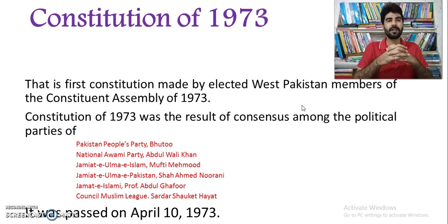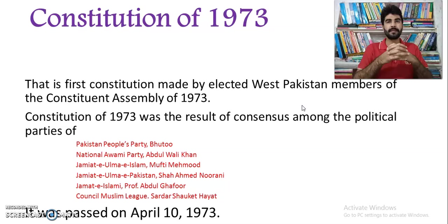The 1973 constitution was the first constitution made by elected members of the Constitutional Assembly of Pakistan. The Constitution of 1973 was the result of consensus among the political parties of Pakistan. These parties agreed upon mutual consensus, and in this way the constitution of 1973 was composed.